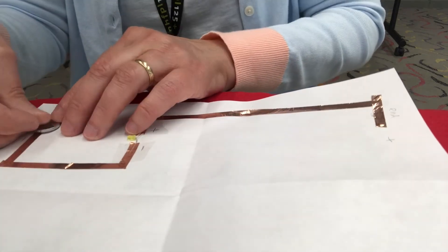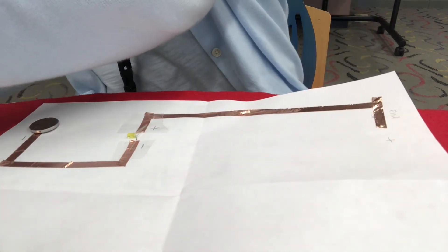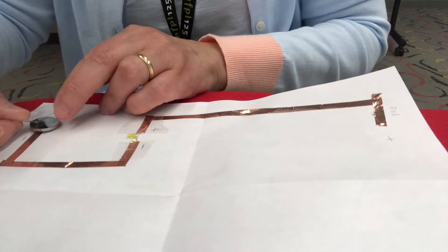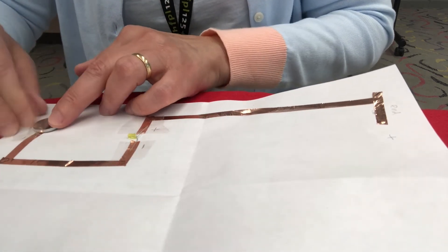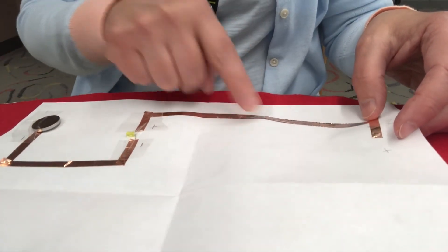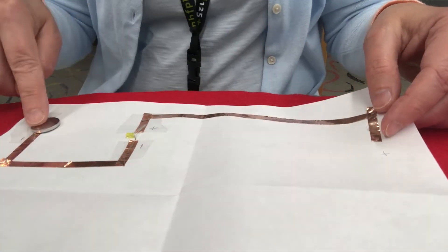Next, we're going to tape in the battery. The negative end will be down and the positive end will be up. Do not completely cover the battery with tape. You'll need part of it uncovered to connect with the other side of the circuit when you fold the card. That's how we complete the circuit.